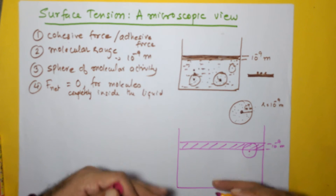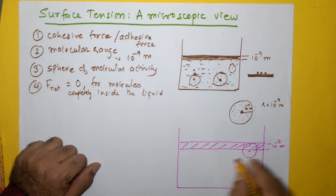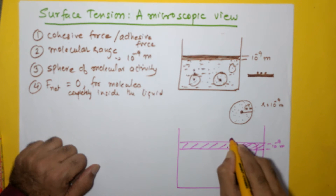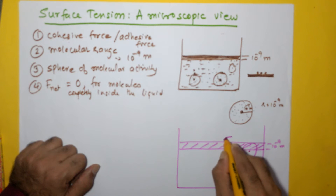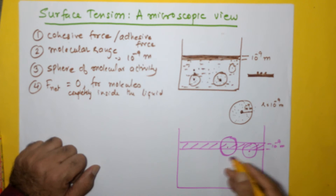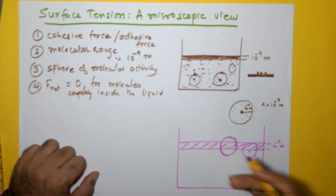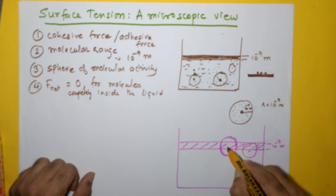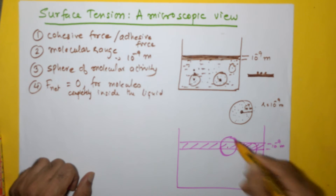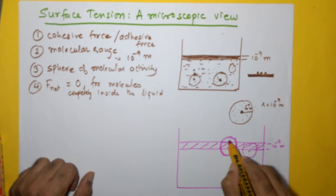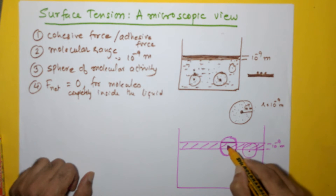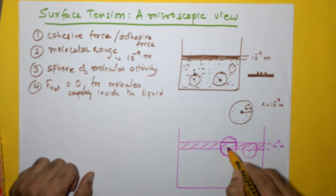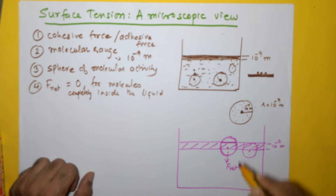Please understand that this film is also part of the liquid. But if I take a molecule slightly above — within the surface film — the sphere of molecular activity will extend outside the liquid. Therefore, the number of molecules above this molecule will be less compared to the molecules below it. And therefore, there is a net cohesive force acting in the downward direction.